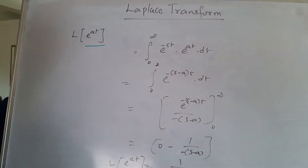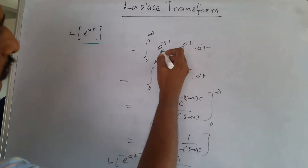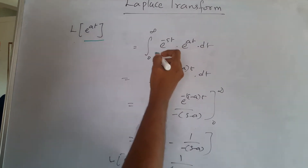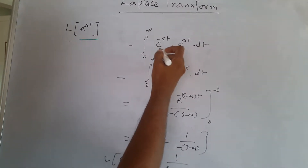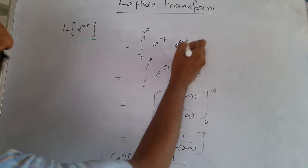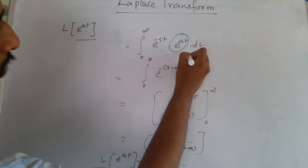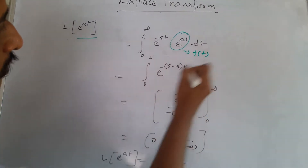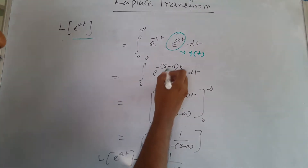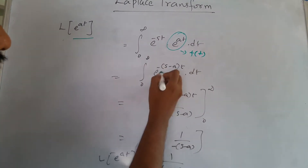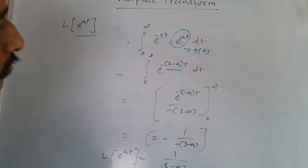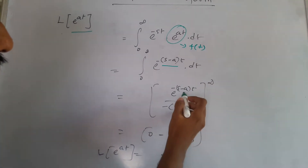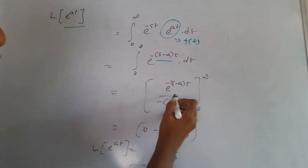Finding the Laplace transform of e to the power of 8t. So f(t) = e^(8t) is substituted, and since the powers are the same, we combine them to set up the integration.